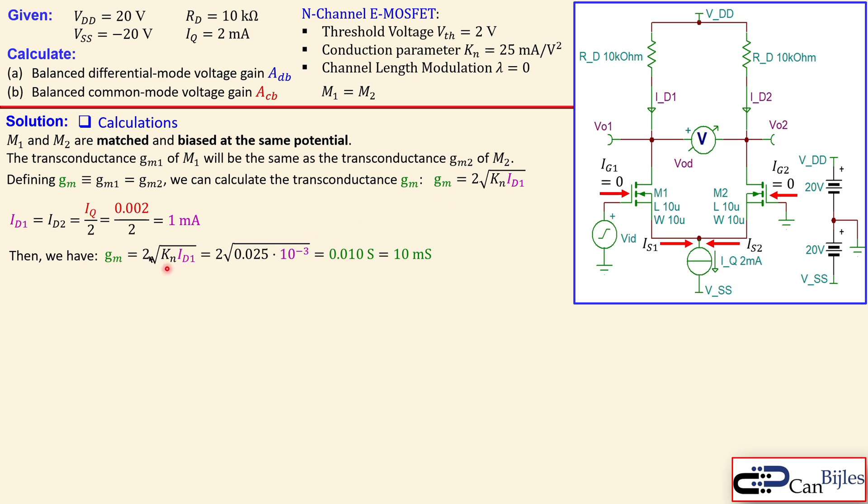Then we have the following. The gm will be, using this formula, 2 times the square root of KN times ID1. And we know the KN, which is 0.025 times 10 to the power minus 3. You get here 0.01 Siemens, or 10 millisiemens.